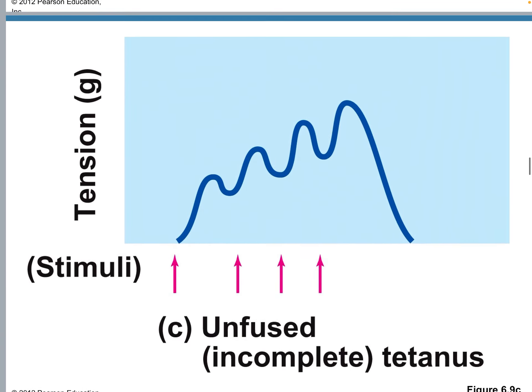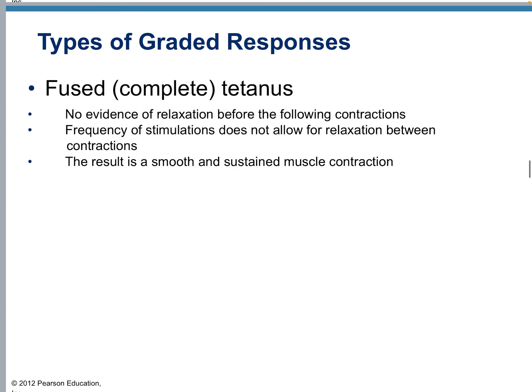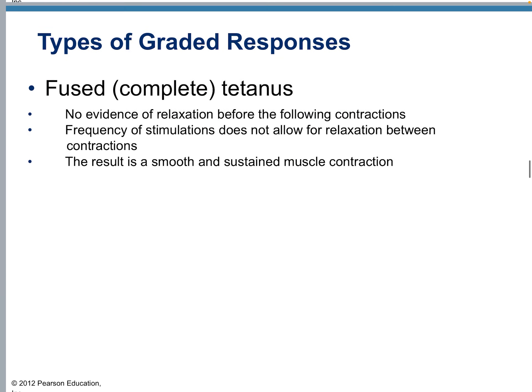In incomplete tetanus you can see small bouts of relaxation. In complete tetanus, there is no evidence of relaxation before the following contractions — the frequency of stimulation does not allow for any relaxation, and it is a smooth and sustained muscle contraction.